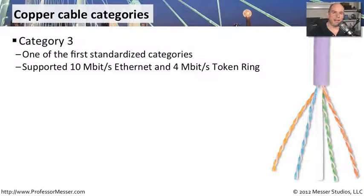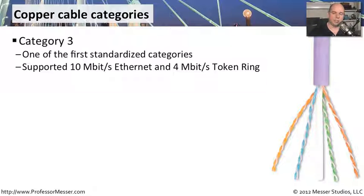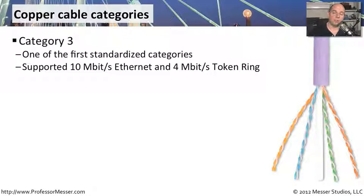When we talk about standardized cabling, we're really talking about different categories of cabling, each with a certain standard associated with it. One of the very first was Category 3, designed to support 10 megabit ethernet and 4 megabit token ring. That was used with early network operating systems like Novell NetWare and Banyan Vines.